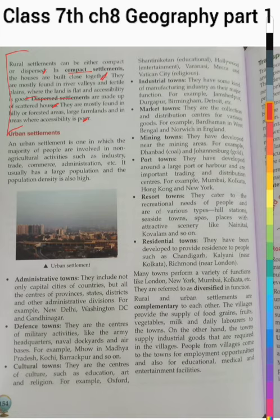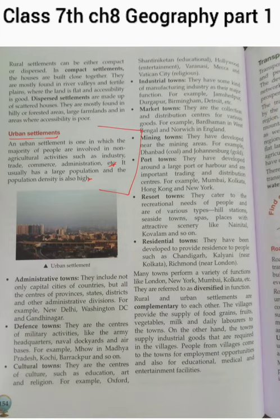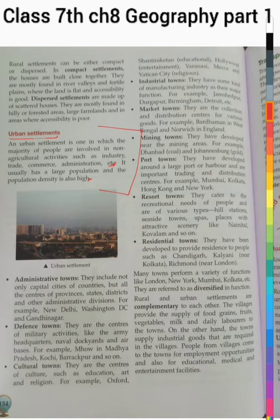Urban settlement is one in which the majority of population are involved in non-agriculture activities such as industry, trade, commerce, and administration. It usually has a large population and population density is very high. Some people work in factories, some in various industries, some in administration — they do not work in agriculture. Urban settlements generally have a larger population and higher density compared to rural settlements.